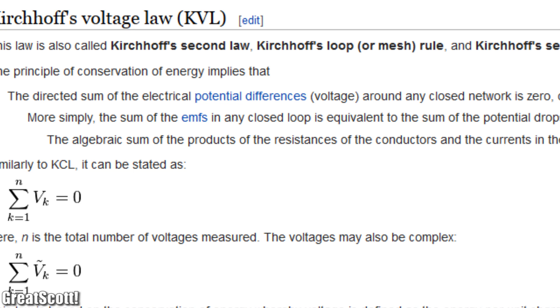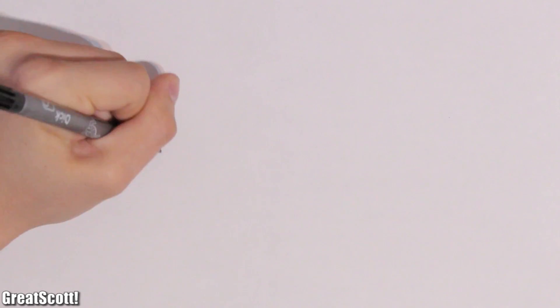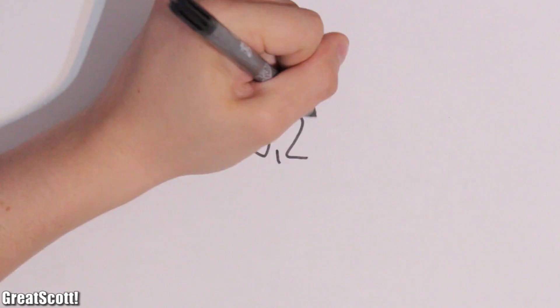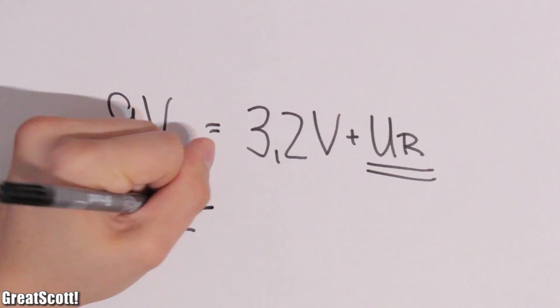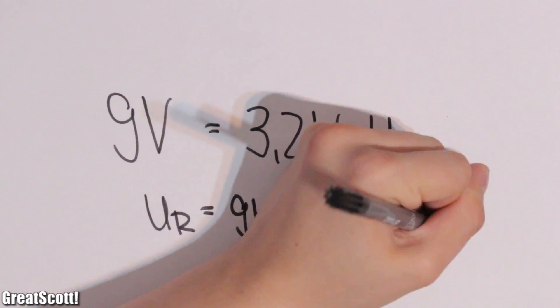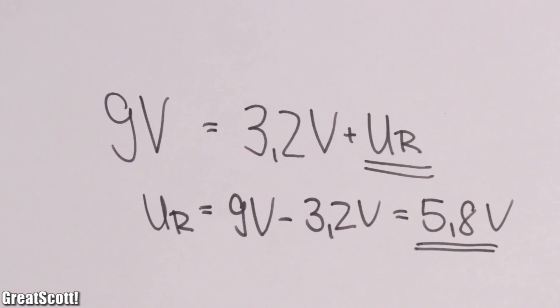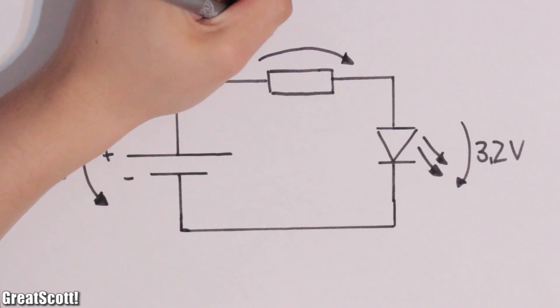Kirchhoff's voltage law gives the answer. The voltage sum in a closed network must be zero. On the left side is the voltage of our power source, and the right side is the voltage of our load. And I think everyone sees that the voltage of the resistor must be 5.8 volts to solve the equation. Then you can just calculate the value for the resistor by Ohm's law.